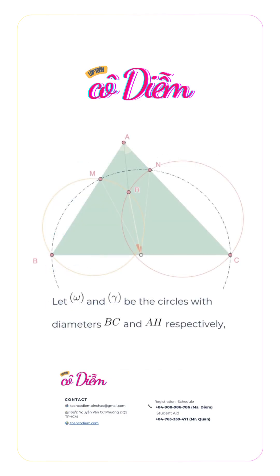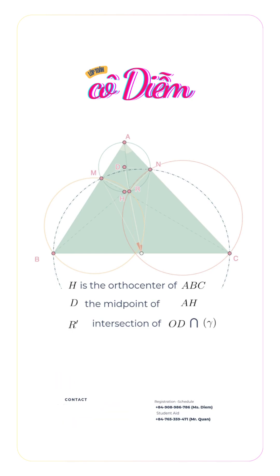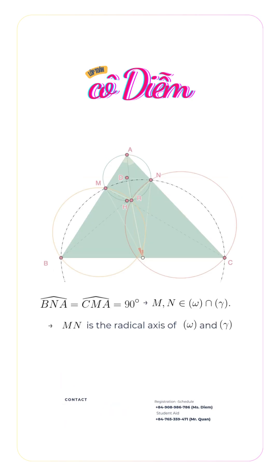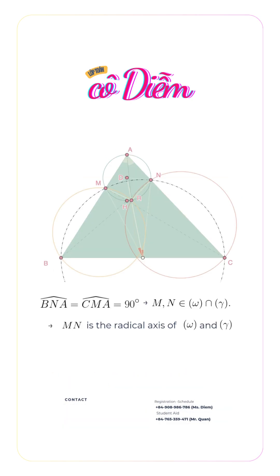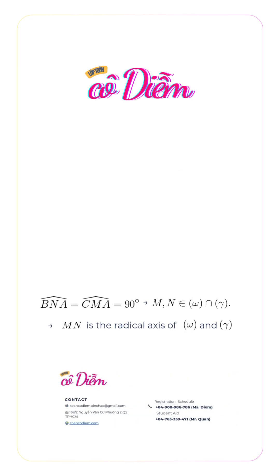Let Ω and Γ be the circles with diameters BC and AH respectively, where H is the orthocenter of triangle ABC. Let D be the midpoint of AH, and R' is the intersection of OD and Γ. We have angle BNA equals angle CMA equals 90 degrees. Thus M and N lie on Γ, the circle with diameter AH.